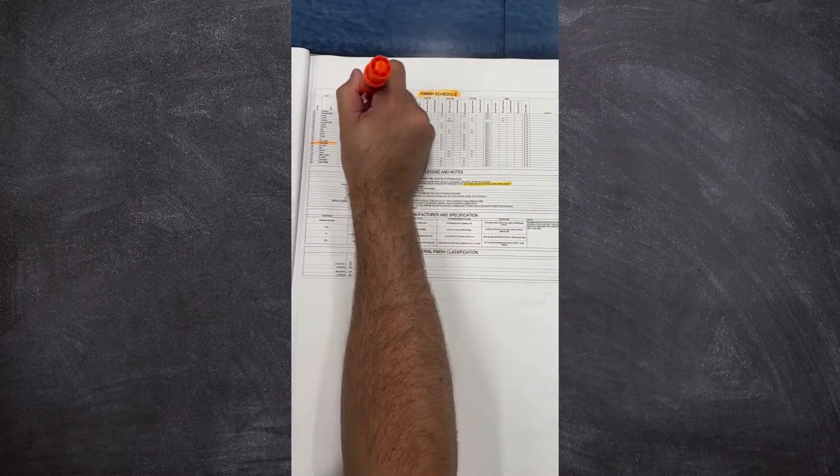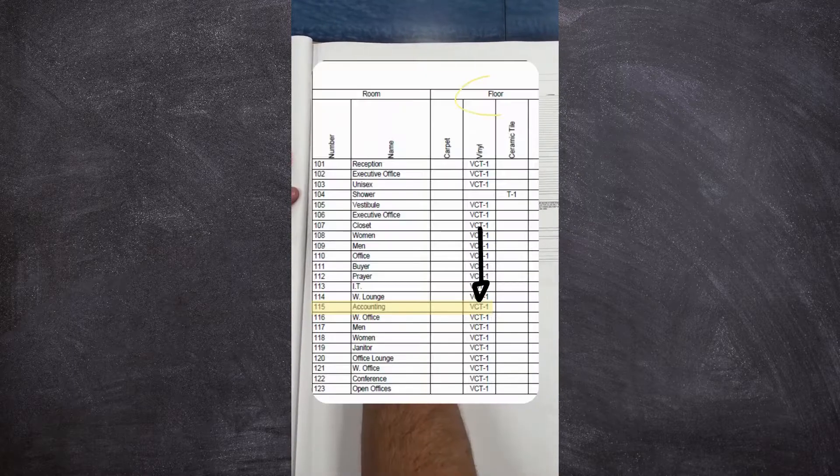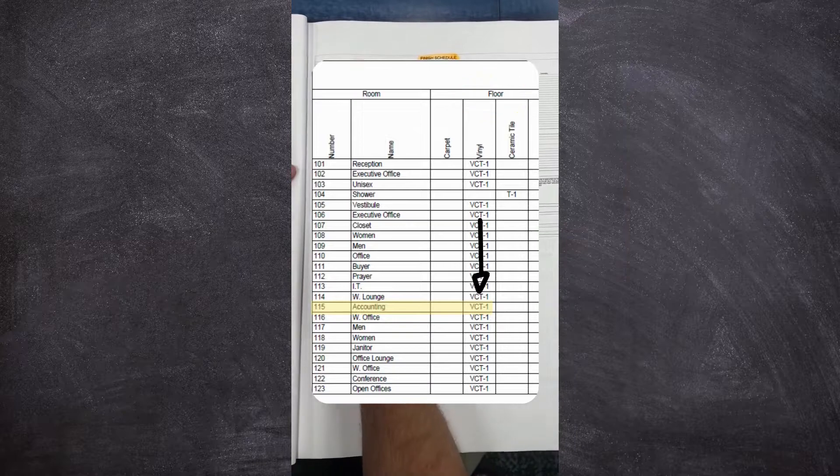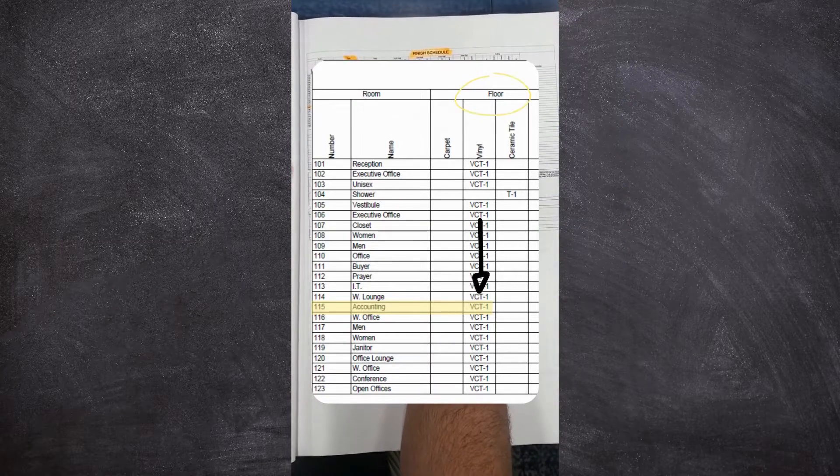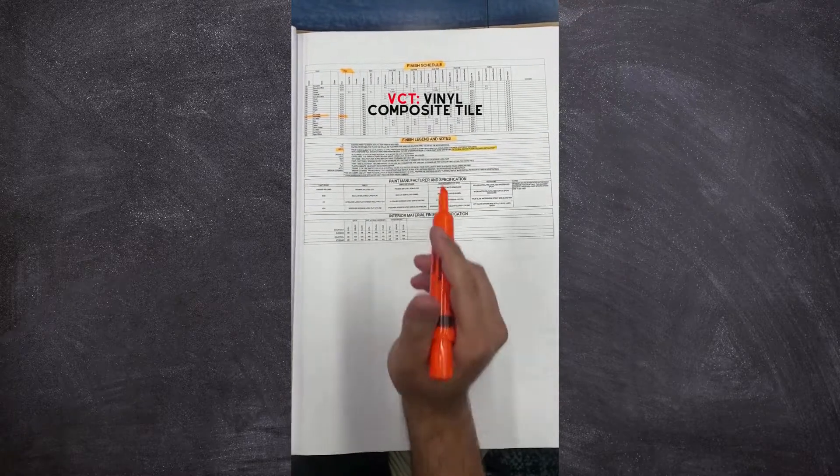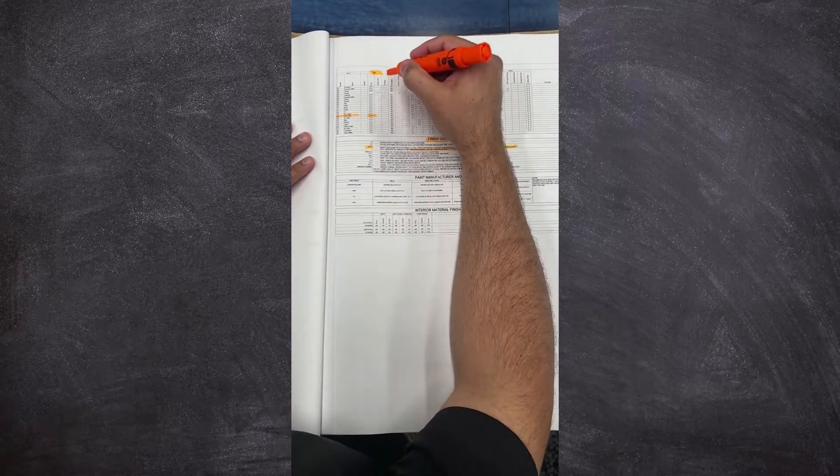So what is our flooring? It says the word floor at the top. It says VCT, okay, so that's a vinyl floor. Down here in the finish legend and notes, you'll read exactly what they want from your VCT.